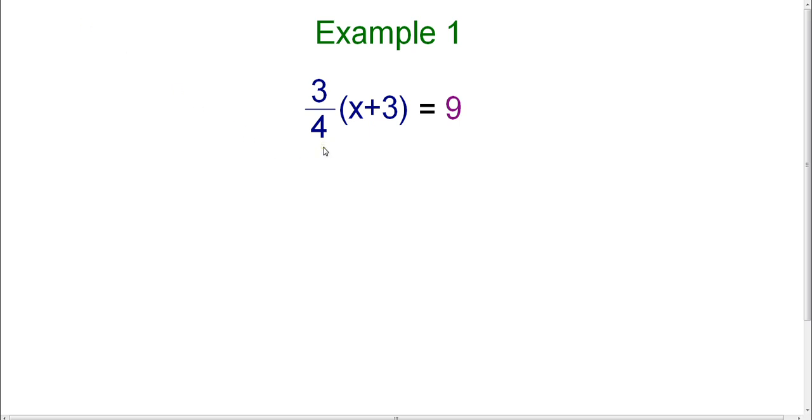You might say, oh, but there is a plus sign, and there is. However, it's contained in parentheses, and if a plus or minus sign is contained in parentheses, then it's not considered a separate term, because this is 3/4 times the quantity x plus 3. There's no plus or minus sign on the left side separating terms. We only have one term on the left, and the answer on the right.